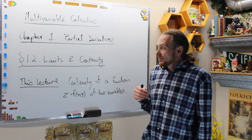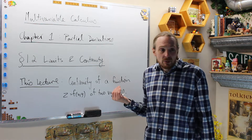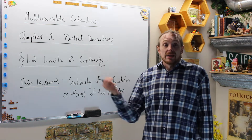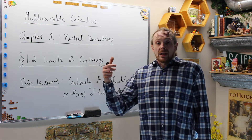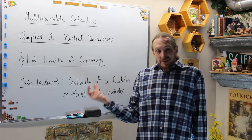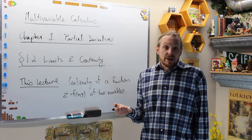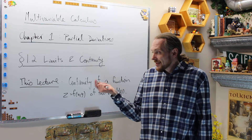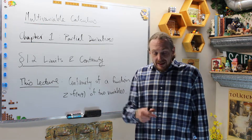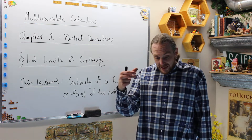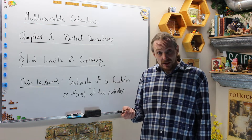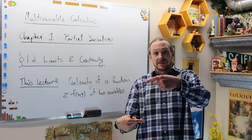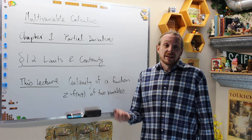We're in Chapter 1, Partial Derivatives, doing Section 1.2, which is Limits and Continuity. Last time we did the definition of a limit approaching a value (a, b) in the plane of a function of more than one variable. We gave the precise definition, showed how to calculate when a limit exists at a point, and also showed that along two different paths, if you get a different limit, then that limit doesn't exist.